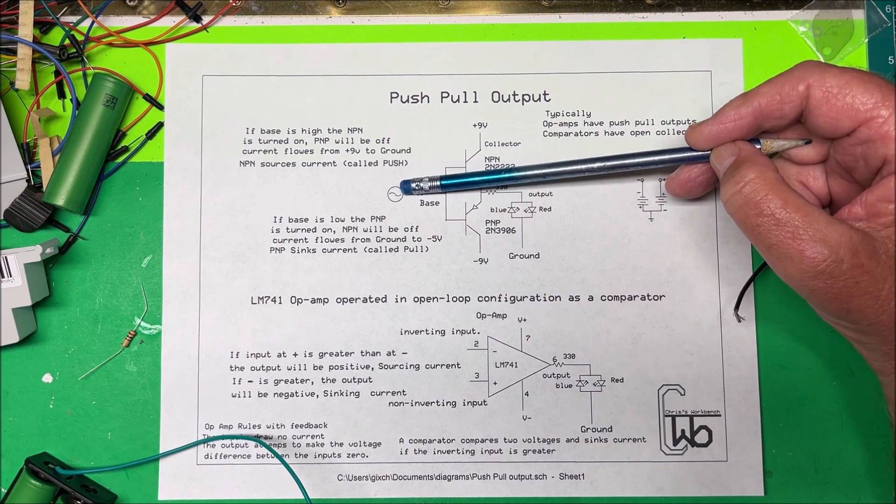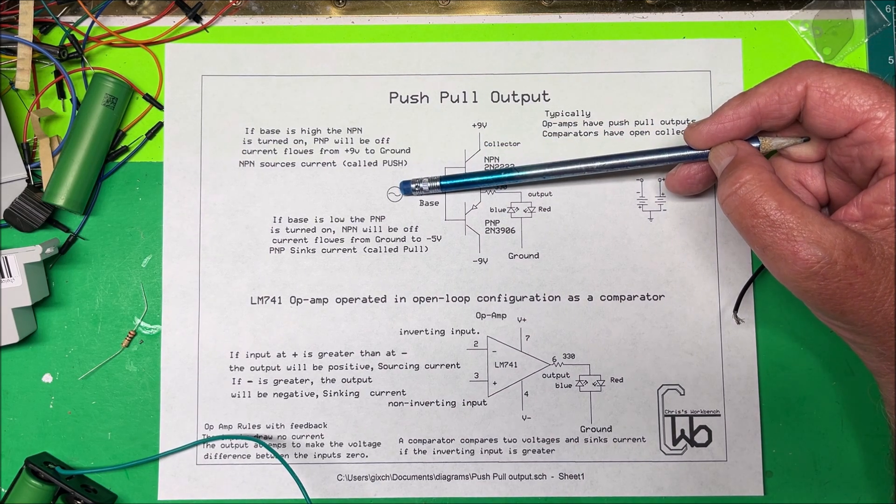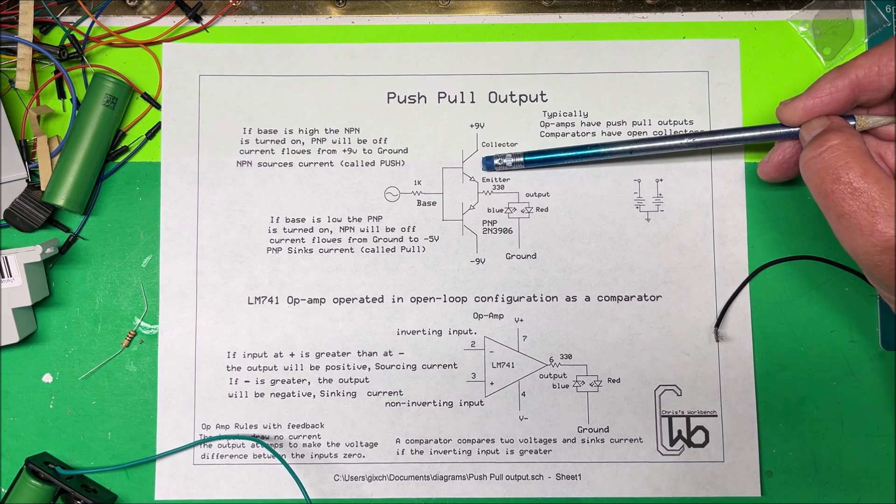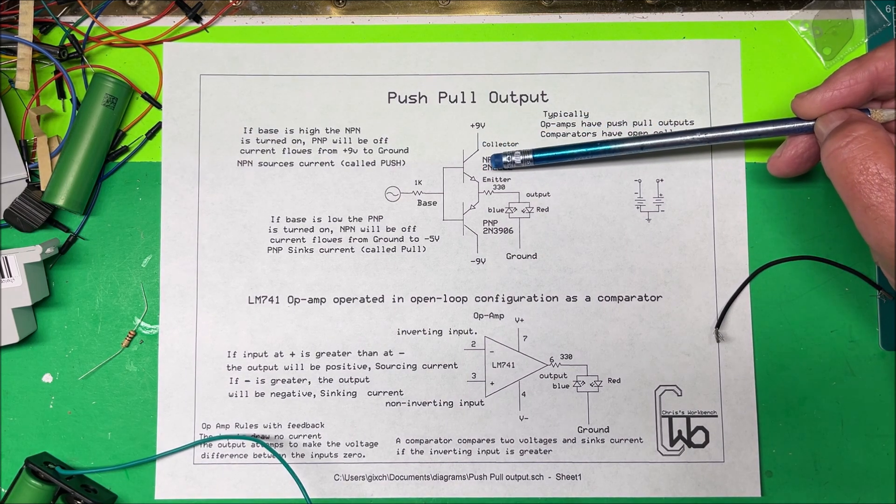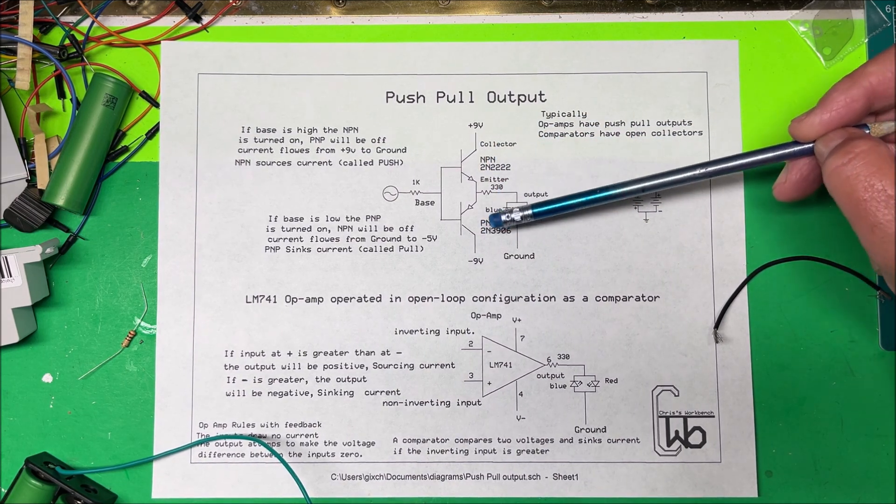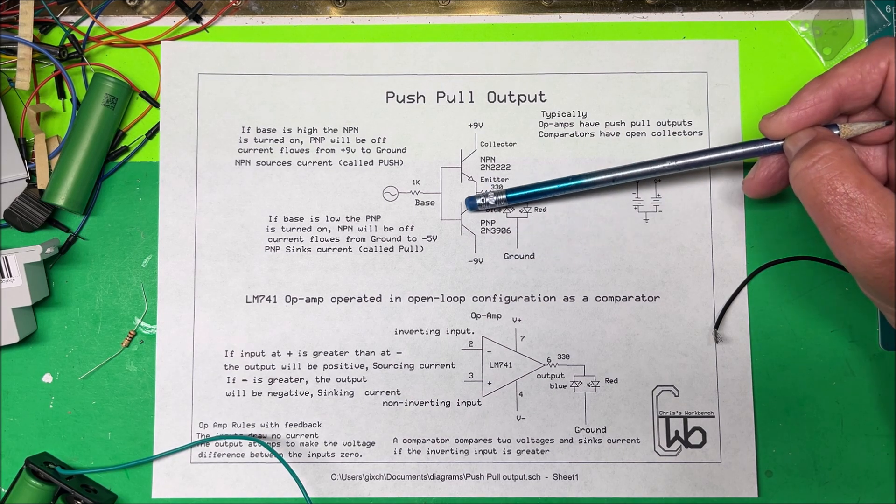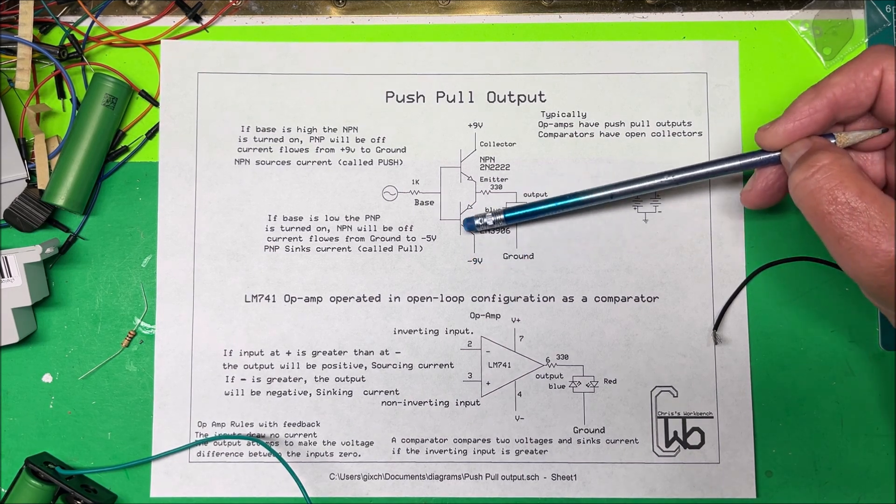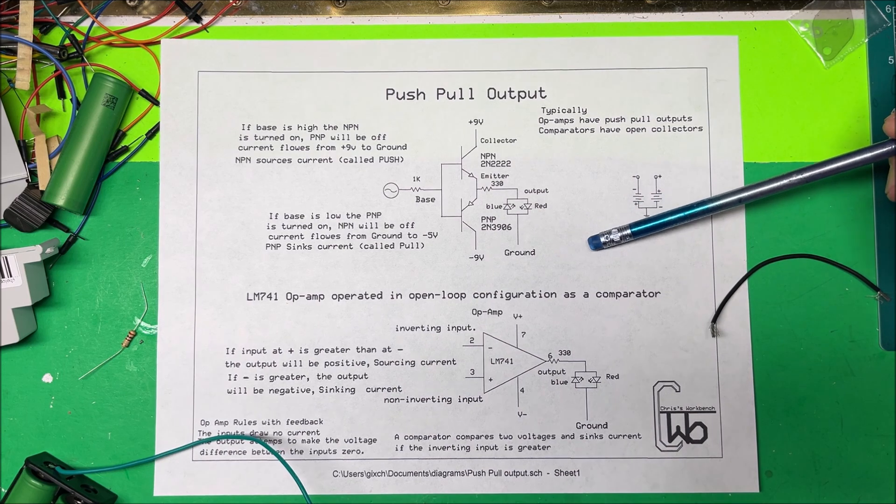And then if we take this side and make that negative, then the NPN transistor will be off, PNP will be on, and then it's going to sink current through here from ground down to this negative 9 volts over here.